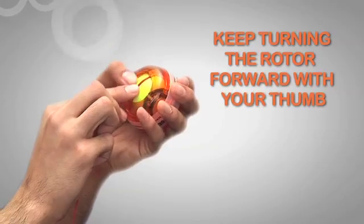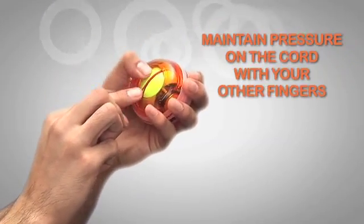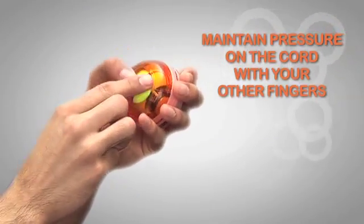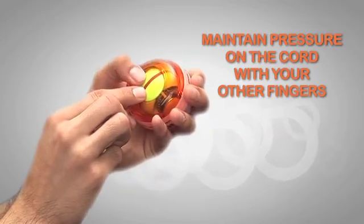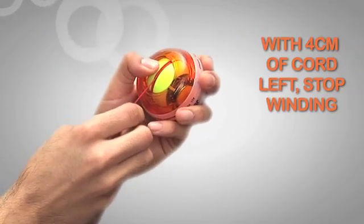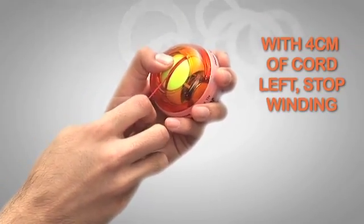Keep turning the rotor forward with your thumb while maintaining pressure on the cord between your other fingers to make sure there is no slack on the string. When there is only about 4cm of cord left, stop winding.